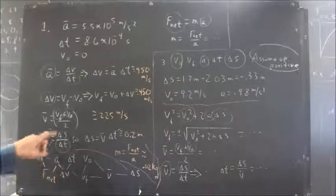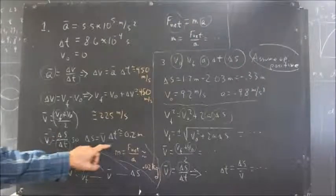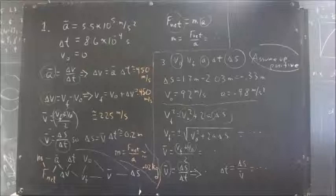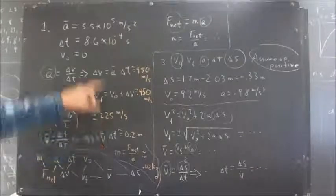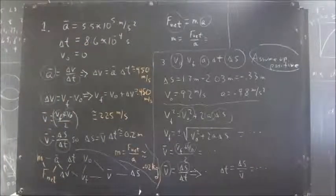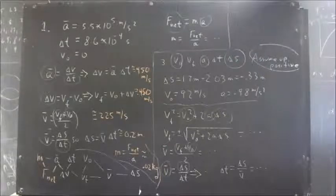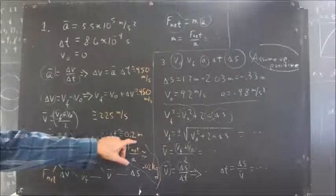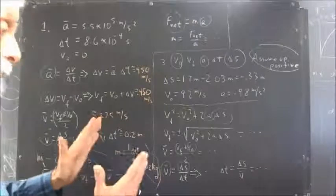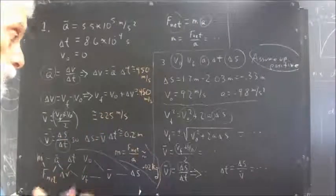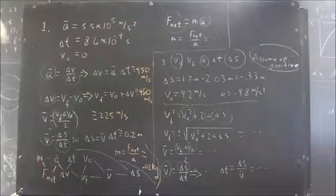Anyhow, your average velocity is delta S over delta T, so delta S is average velocity times delta T. If you multiply 225 meters per second by the 8.6 times 10 to the negative 6th seconds, you're going to get something pretty close to 0.2 meters. It's not a real long barrel. We're not talking about a rifle. We're talking about a fairly long barrel pistol.